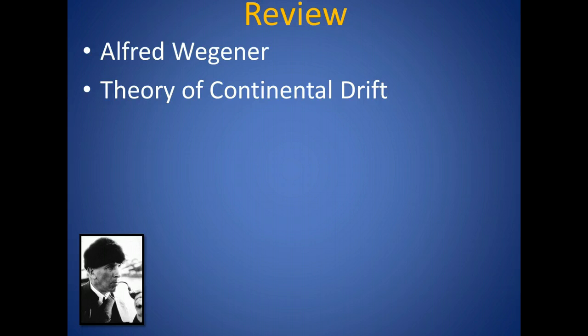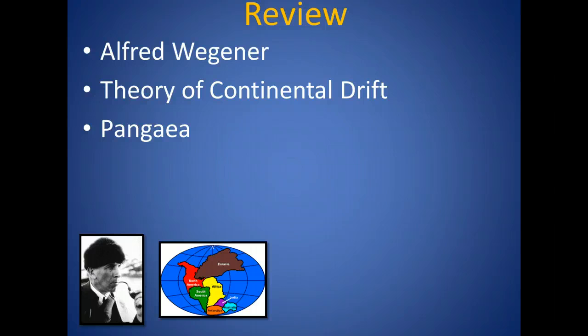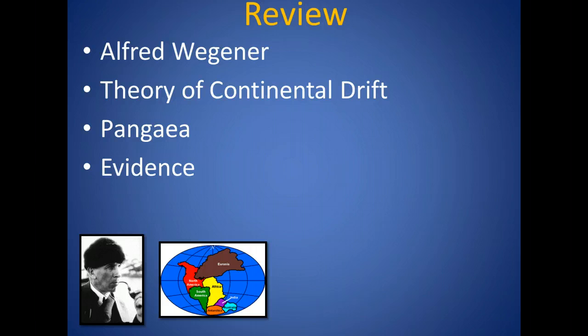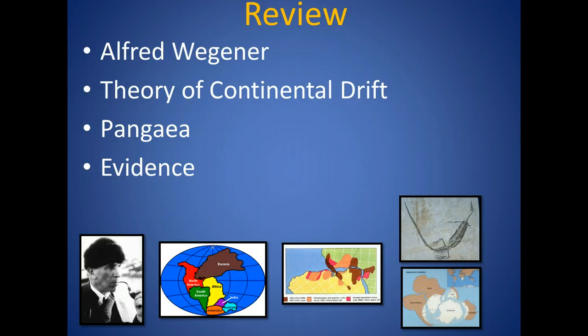Let's review a little bit before we start. The last time we talked, we found out that Alfred Wegener was a German scientist who proposed the theory of continental drift. He believed that all of the continents were lined up from the North Pole to the South Pole in a huge supercontinent called Pangaea. He had evidence that these continents eventually drifted apart. Do you remember what these three pieces of evidence were? Say them to yourself right now. Even though Wegener had this evidence, scientists did not believe him because he couldn't explain how the continents moved.